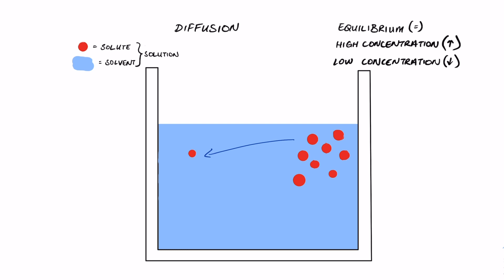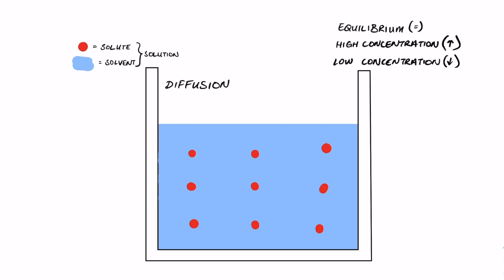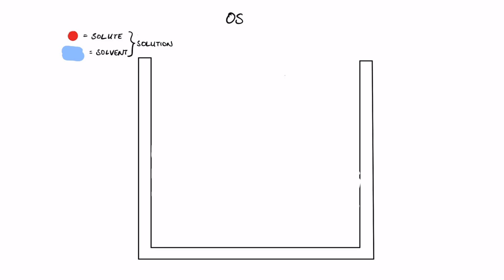Diffusion is the process where both the solute and solvent molecules rearrange themselves to reach equilibrium — specifically driven by the solute moving from high to low concentration. So diffusion is the movement of the solute from a high concentration to a low concentration, thereby reaching equilibrium in the container.